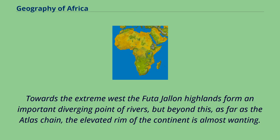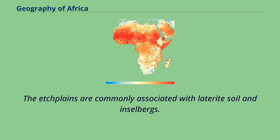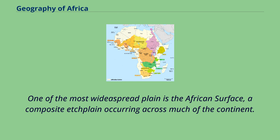Towards the extreme west the Futa Jallon highlands form an important diverging point of rivers, but beyond this, as far as the Atlas chain, the elevated rim of the continent is almost wanting. Much of Africa is made up of plains of the pediplain and etchplain type, often occurring as steppes. The etchplains are commonly associated with laterite soil and inselbergs. Inselberg-dotted plains are common in Africa including Tanzania, the Anti-Atlas of Morocco, Namibia, and the interior of Angola. One of the most widely dispersed plains is the African surface, a composite etchplain occurring across much of the continent.